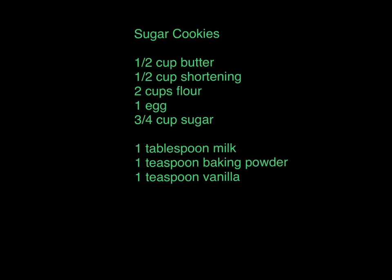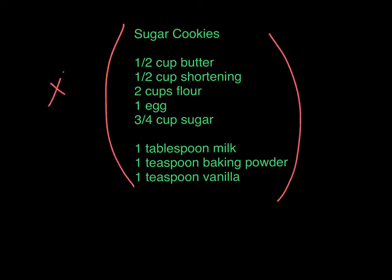But first let's take a look at this recipe for sugar cookies. If we wanted to double the recipe, we would take each ingredient and multiply it by 2. In doing so, we would not be changing the properties of the cookies.